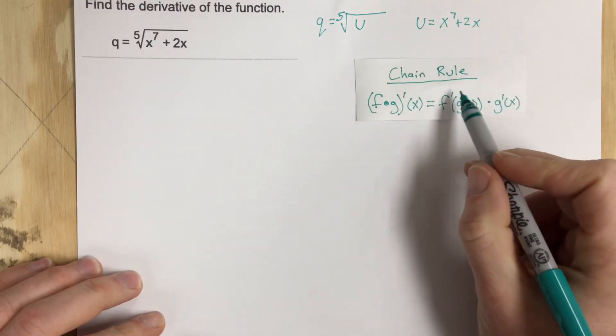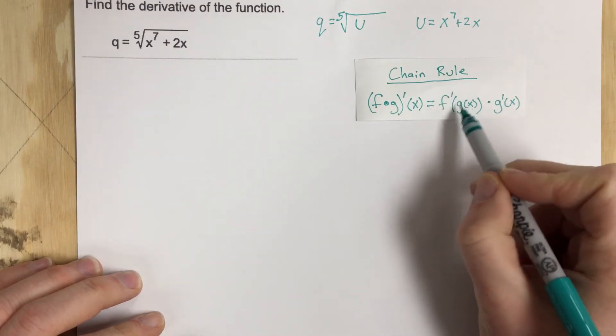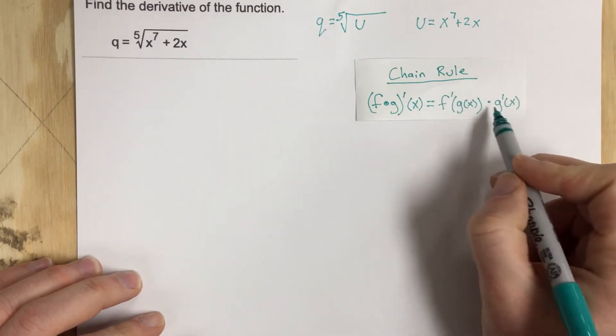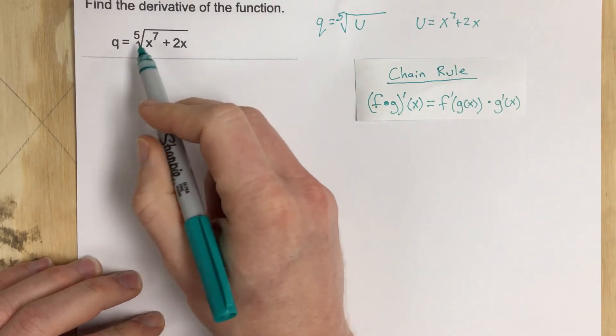So we're going to go ahead and use the chain rule and we have F prime which is the derivative of the outside function times the derivative of the inside function.